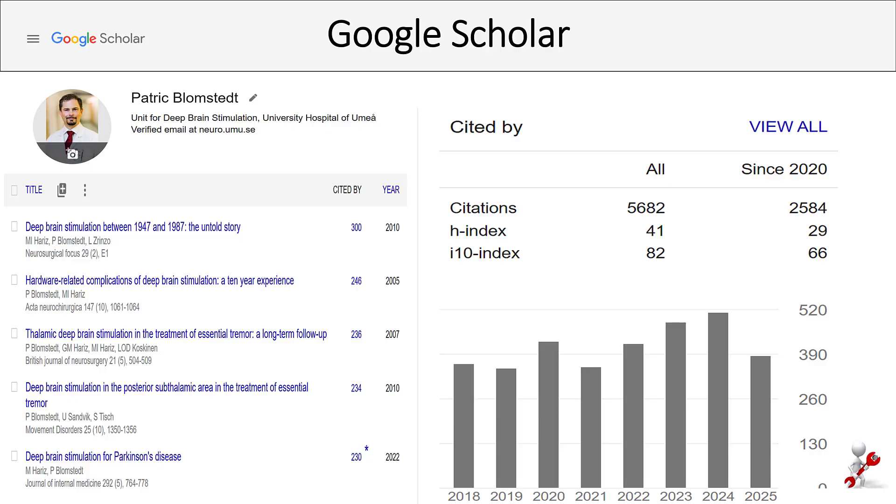This is how the H-Index is calculated manually, but in reality, we will of course use internet databases and let them do the work for us. You can use, for example, Web of Science or Scopus, but the easiest is to use Google Scholar.